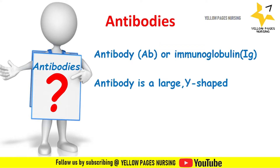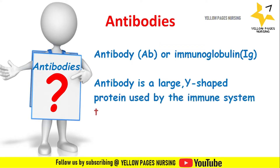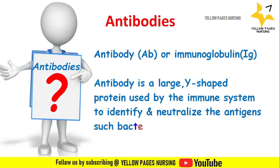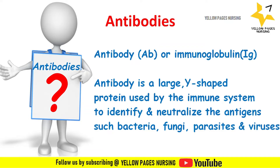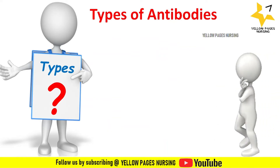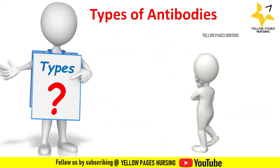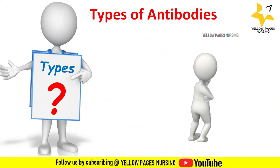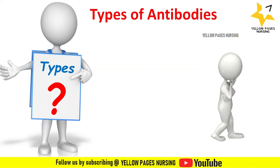An antibody is a large Y-shaped protein used by the immune system to identify and neutralize antigens such as bacteria, fungi, parasites, and viruses. Antibodies, otherwise called immunoglobulins (Ig), are classified into five isotypes.